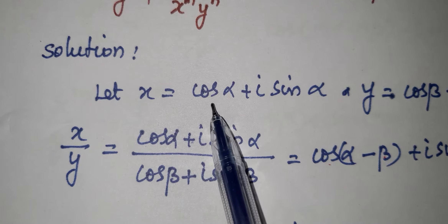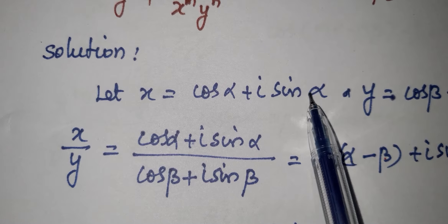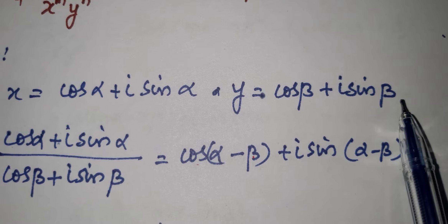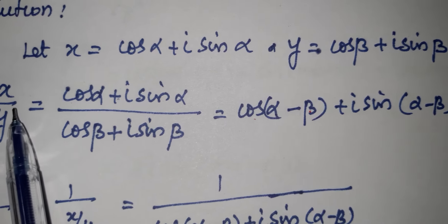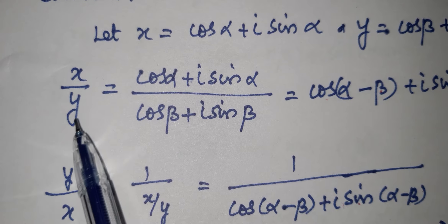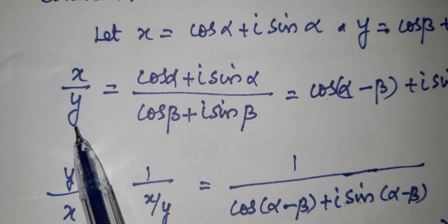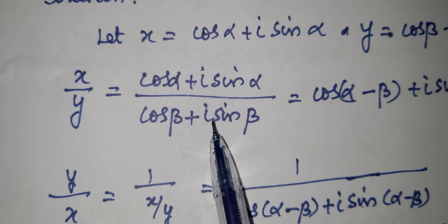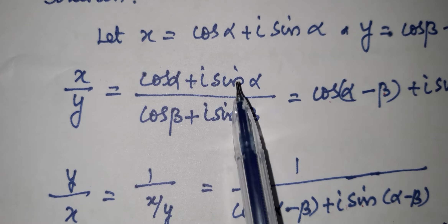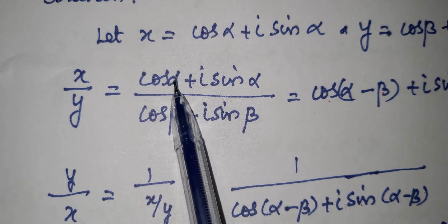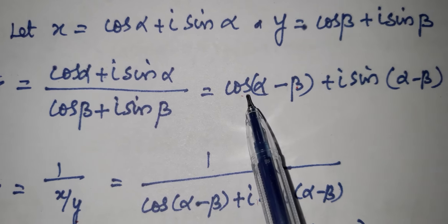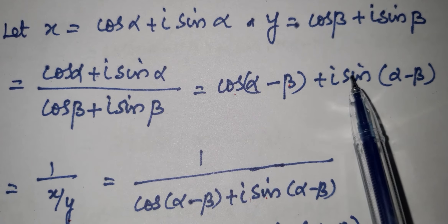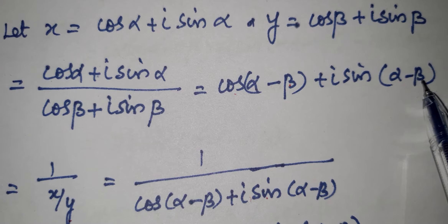First, the value of x is equal to cos alpha plus i sin alpha. For x by y: x is cos alpha plus i sin alpha divided by cos beta plus i sin beta. This is division, and the angle subtracts. So x by y equals cos(α−β) plus i·sin(α−β).